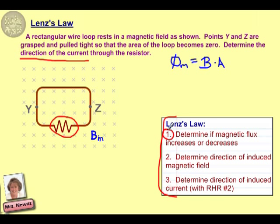So for step number one here, when it says determine if the magnetic flux increases or decreases, we simply want to look at these two factors to see which one is changing. And in this particular case, in the problem, it tells us that points Y and Z are pulled tight so that this area that we have right now becomes zero. So the area here is decreasing. There is no change mentioned to the magnetic field. So that means that our magnetic flux is decreasing.